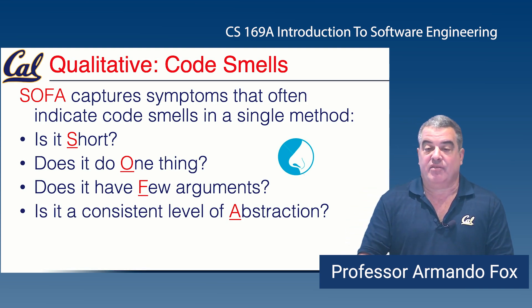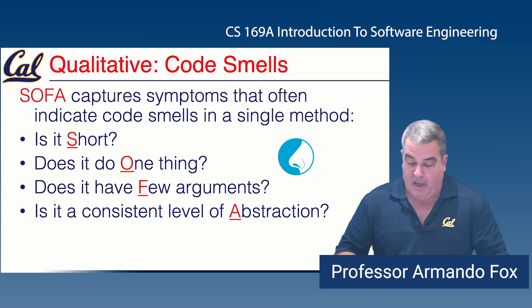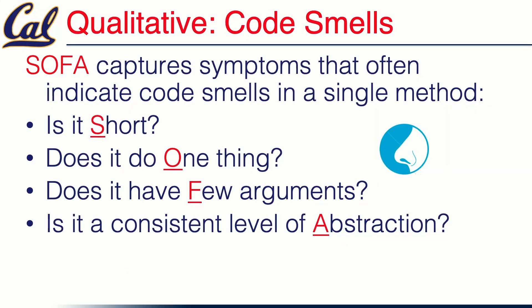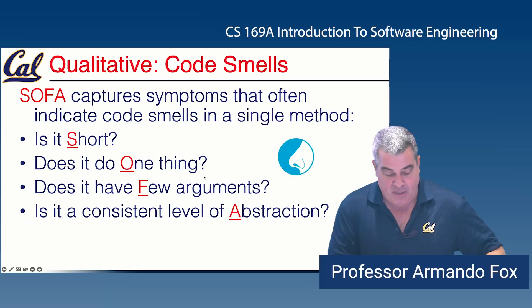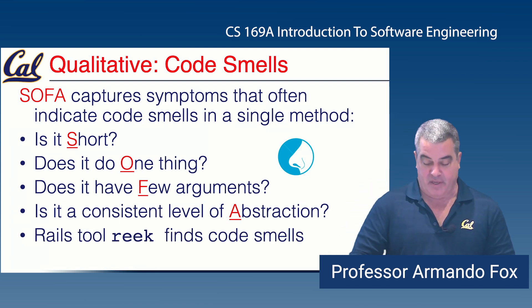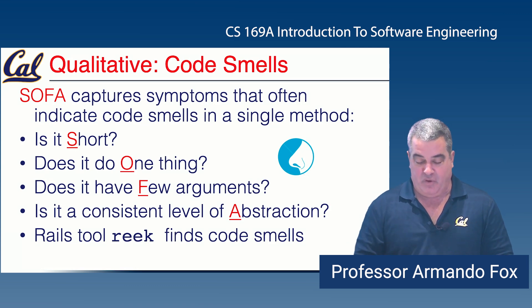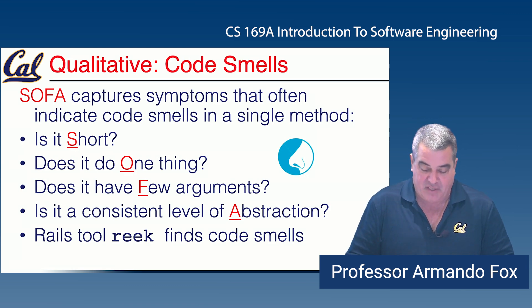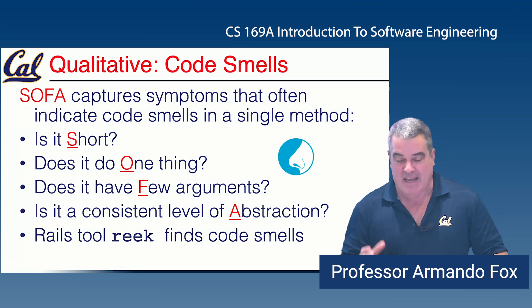And finally, does the method have a consistent level of abstraction? All statements in a given method should either be talking about what is to be done, or all talking about how a specific thing is being done. If you mix those — where some lines say what to do but others dive into details about how — you're very likely violating at least one of the other guidelines and making the code hard to read. As with everything in Rails, is there a tool that will help you find code smells? Yes, there is. It's called Reek — and to say something reeks is to say it has a really bad smell.